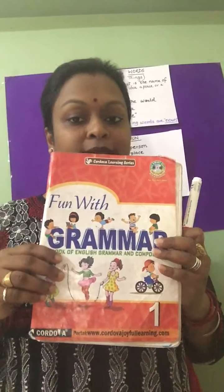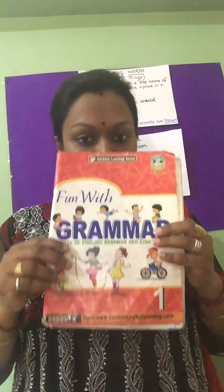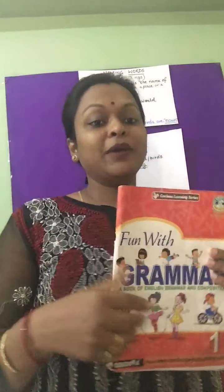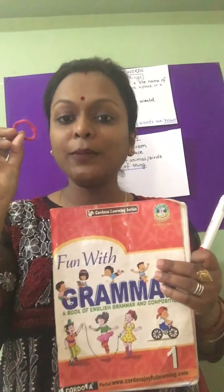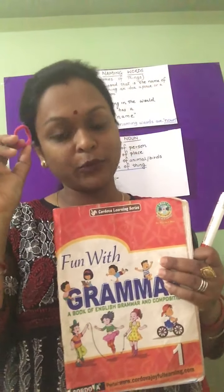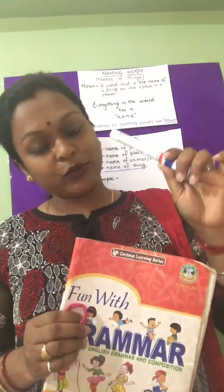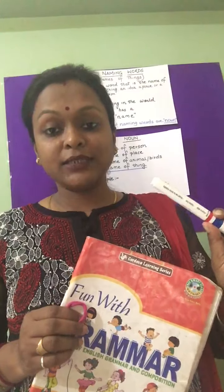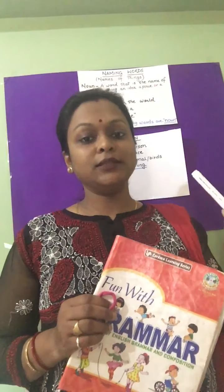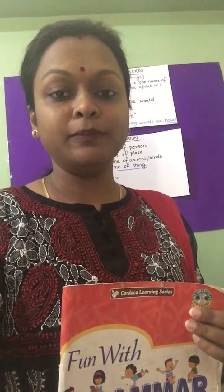I have a few things with me. This is a book — the name of this thing is book. I also have this rubber band — the name of this thing is rubber band. And this is a pen or marker. Everything has a name, and all these naming words are nouns.